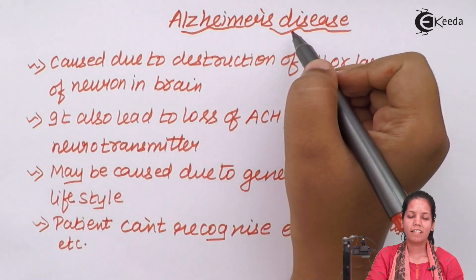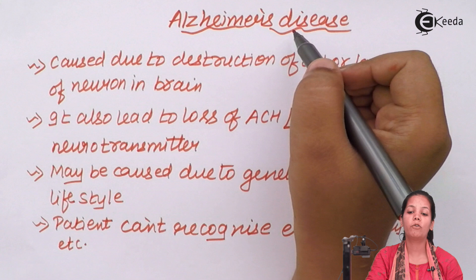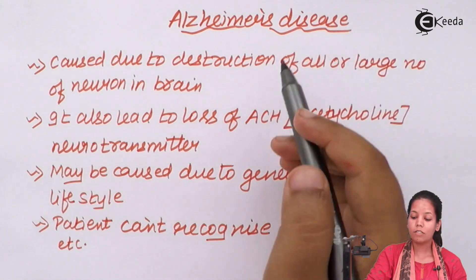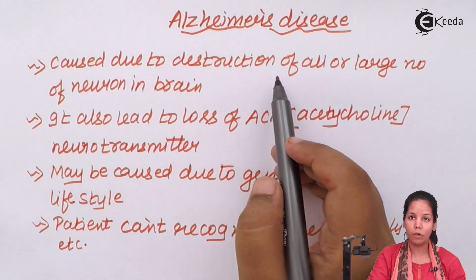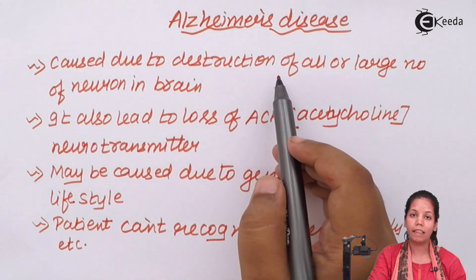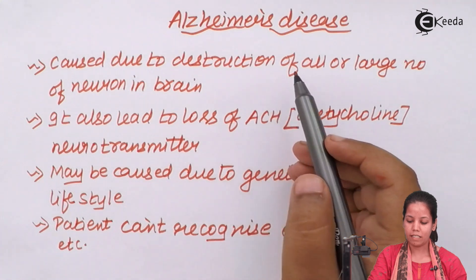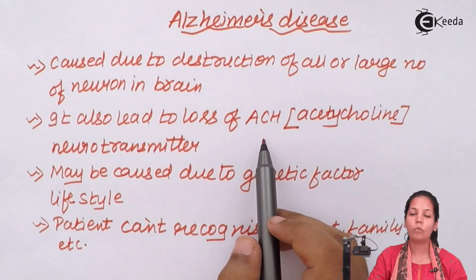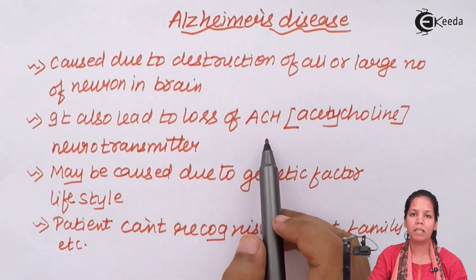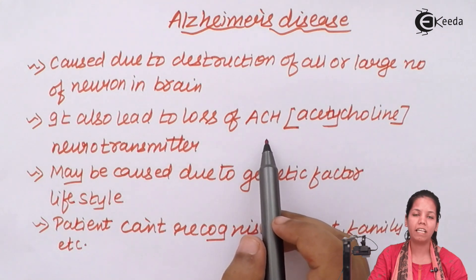Alzheimer's disease is one of the diseases in which people tend to forget a lot. This is caused due to destruction of mature neurons in the brain, and this may be caused due to lifestyle or genetic factors. It leads to loss of ACH, that's acetylcholine, one of the neurotransmitters that helps to carry impulses very effectively in the brain.